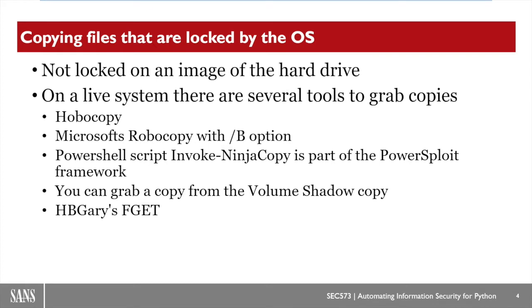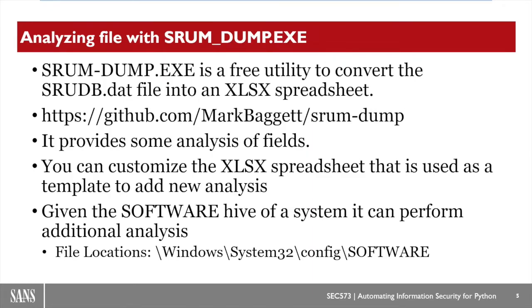If you're dealing with a forensics image such as a disk dump or a dead copy of a hard drive, you can just grab a copy of the file without worrying about it being locked. However, if you're dealing with a live system, that file will be locked by the operating system, and you'll need to use a utility such as Hobocopy, Microsoft's Robocopy with the /B option, the Invoke-NinjaCopy PowerShell script from the PowerSploit framework, HBGary's fget utility, or some other means such as grabbing it from a volume shadow copy to get a good copy of the database.